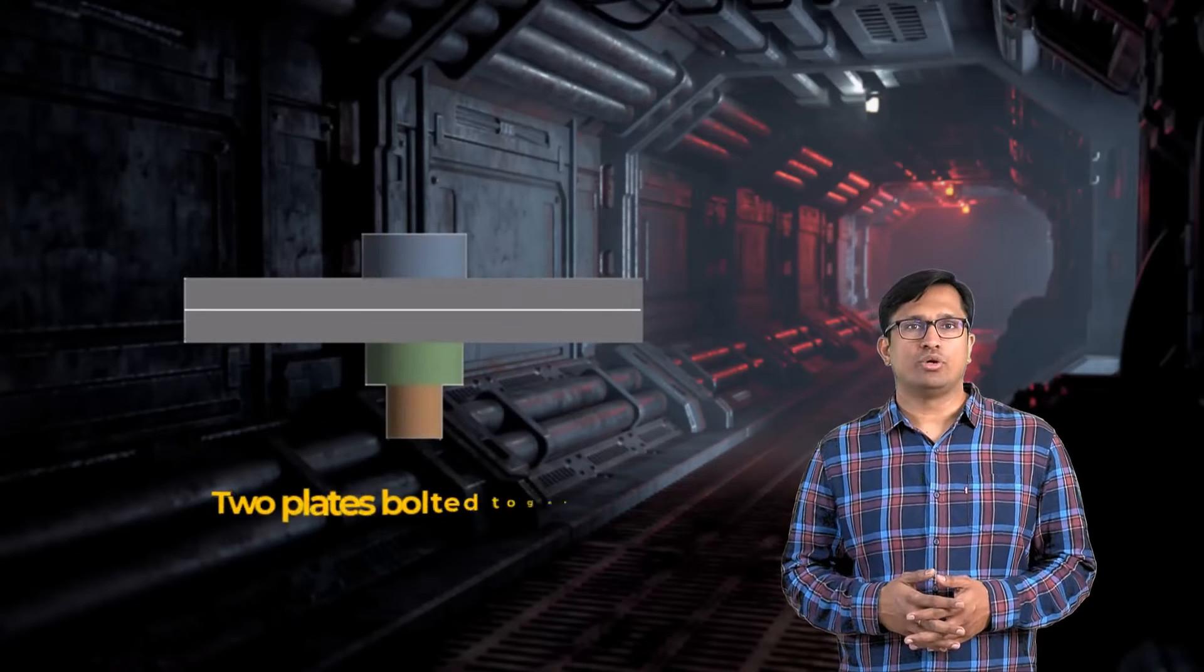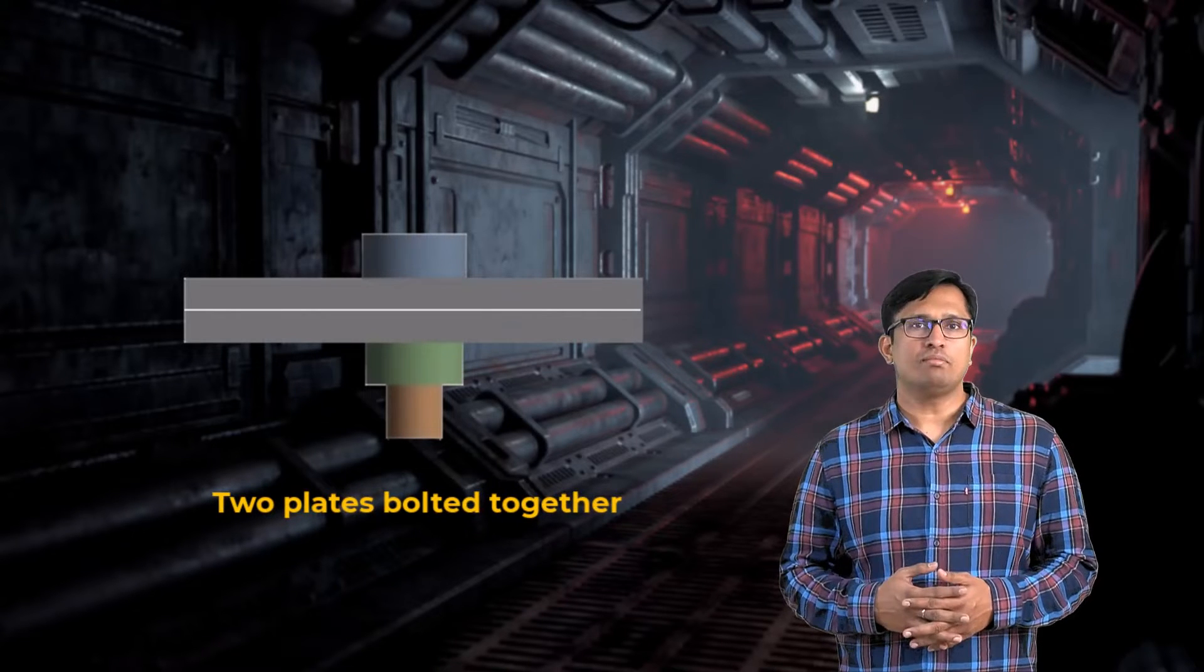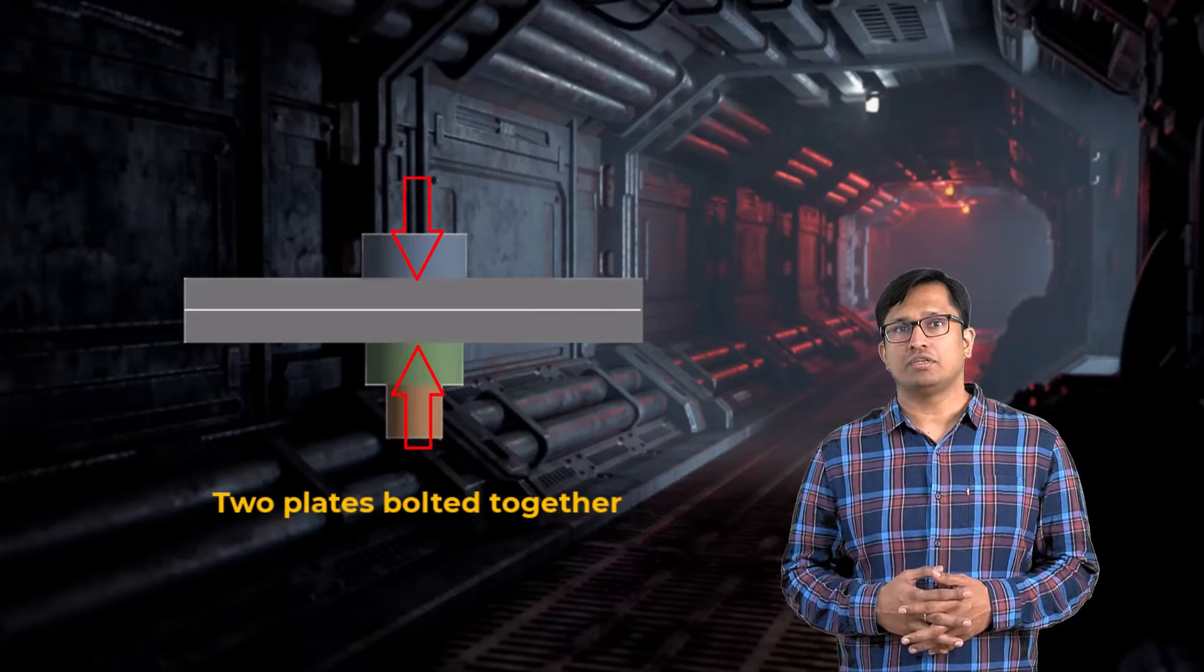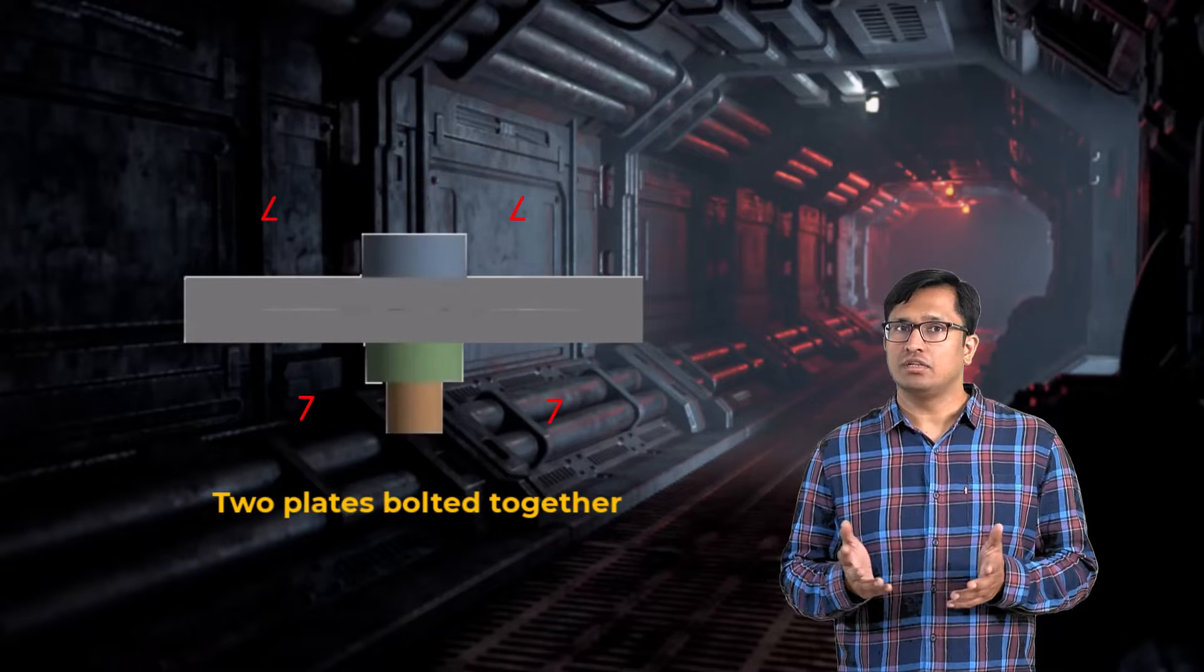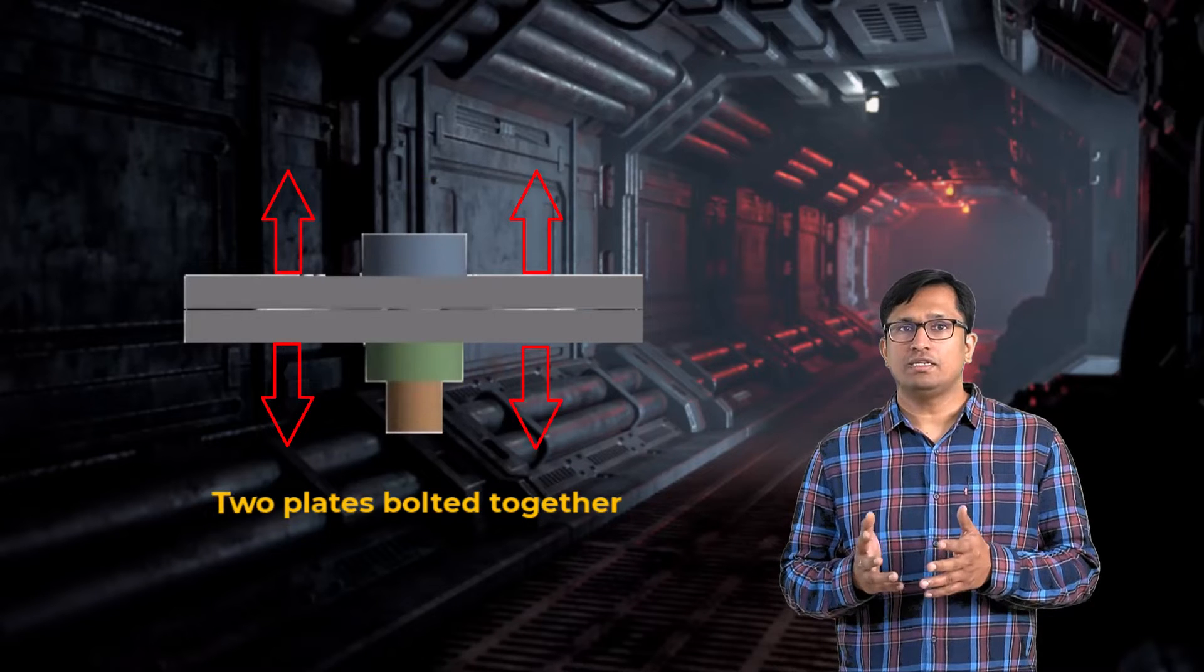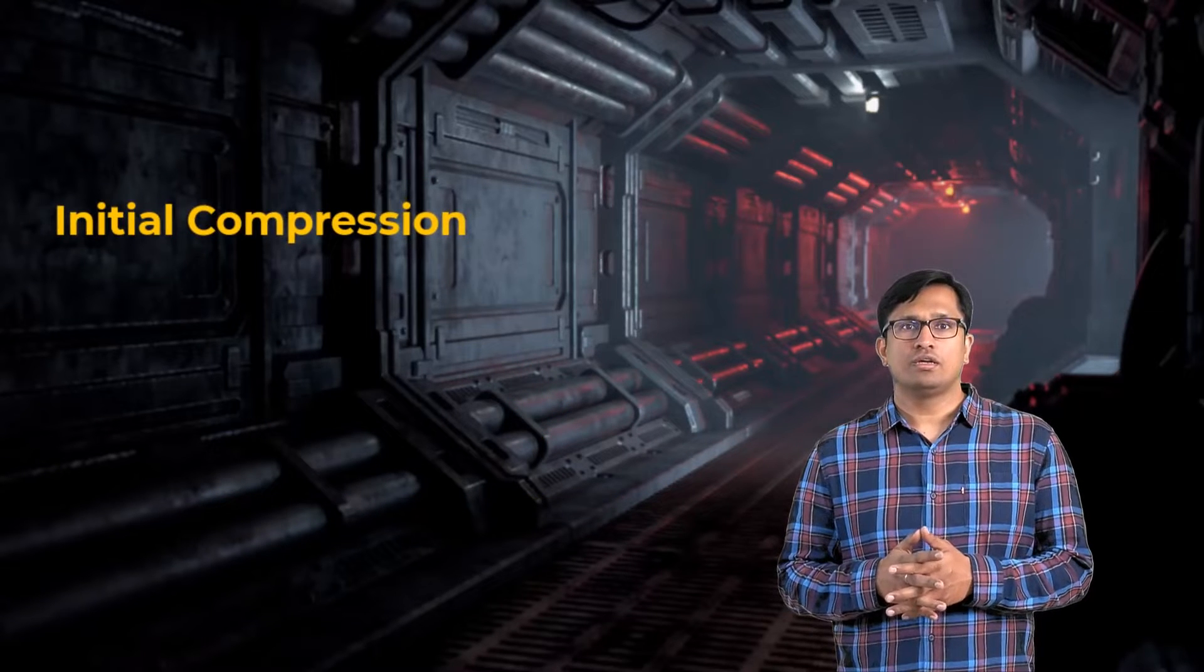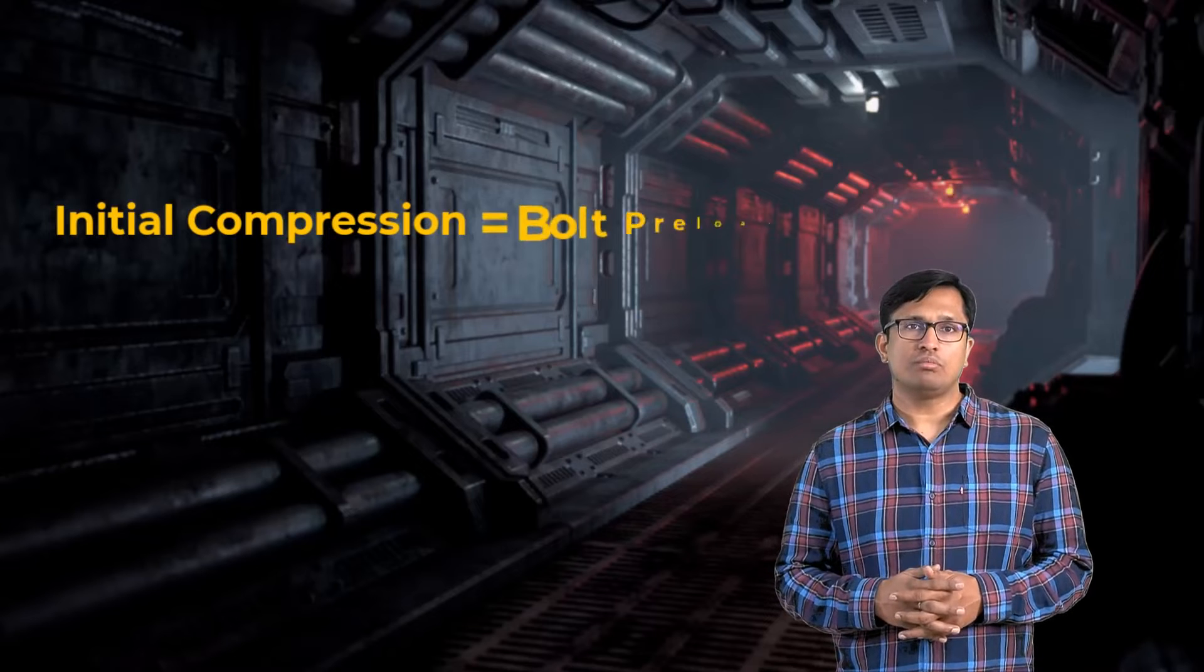The goal of a bolted joint is to establish and maintain enough initial compression in the joint so that the joint does not separate under external loads. In a well-designed joint, the initial compression in the joint is achieved by preloading the bolt.